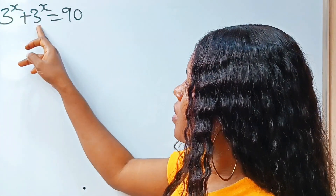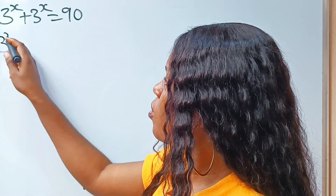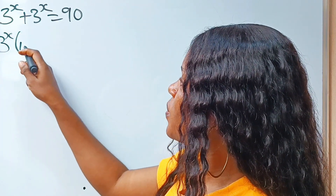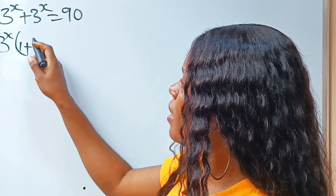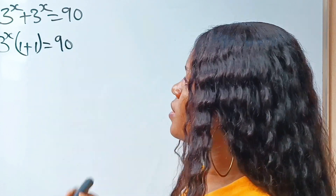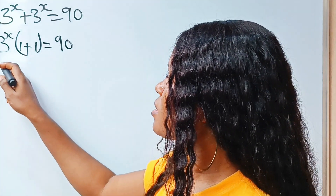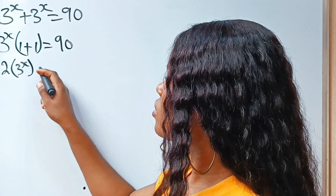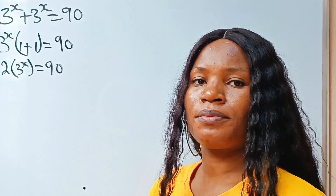So 3 to the power of x plus 3 to the power of x — they have 3 to the power of x in common. When this is divided by this, we have 1, plus when this is divided by this, we have another 1. It's equal to 90. So this simply means 2 multiplied by 3 to the power of x is equal to 90.